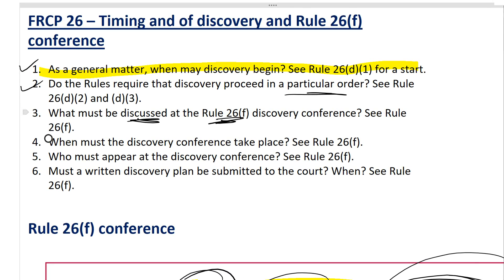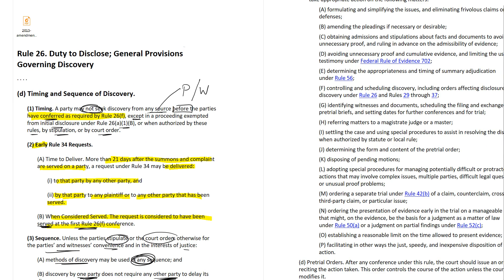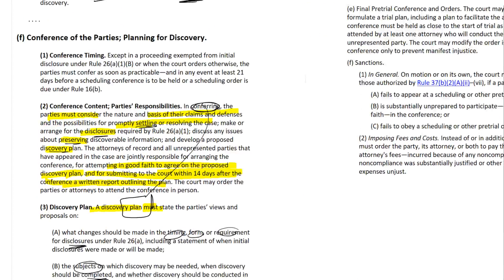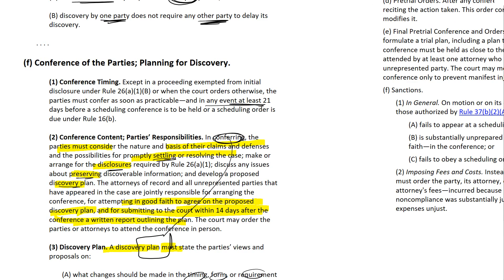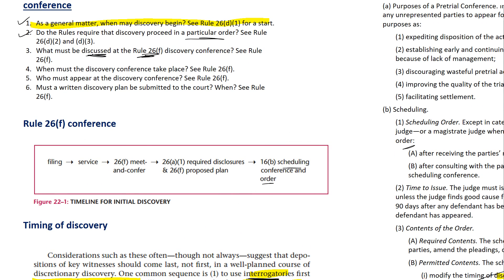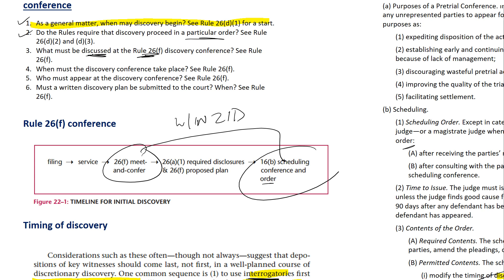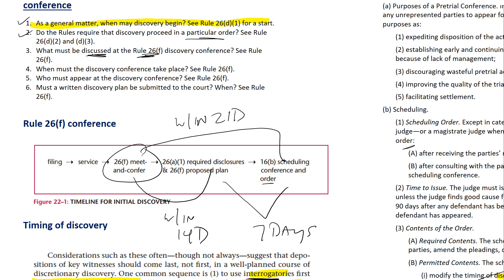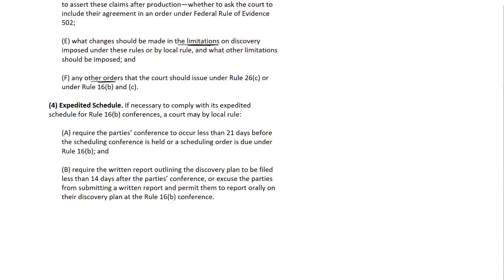When must the discovery conference take place? Under Rule 26F, the conference has to be at least 21 days before the scheduling conference or the scheduling order is due. Here's how it works: the meet and confer must be within 21 days of the scheduling conference or order, and then the discovery plan is due within 14 days after the meet and confer. The idea is then the judge should have seven days to look at the discovery plan and figure out what to do.